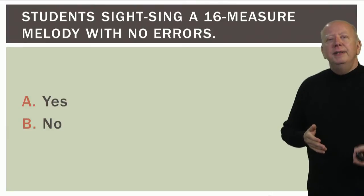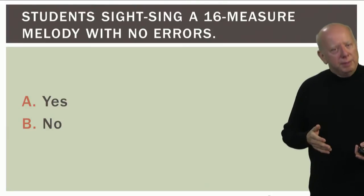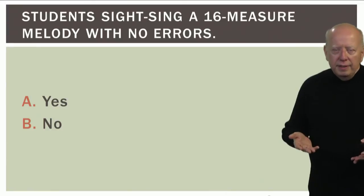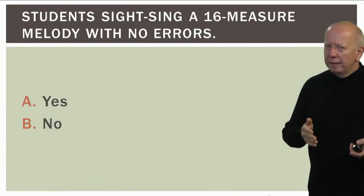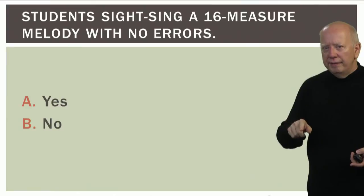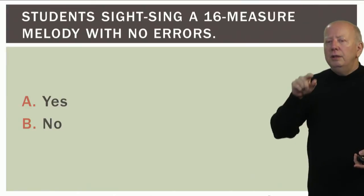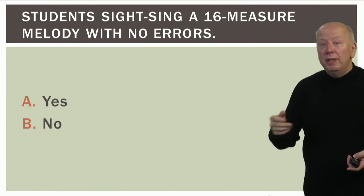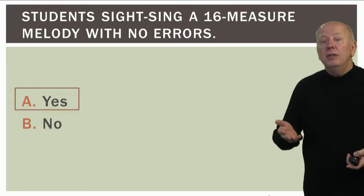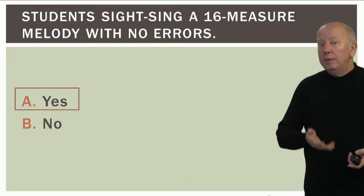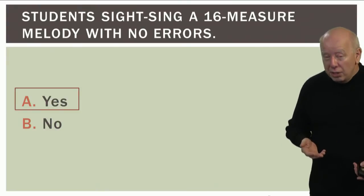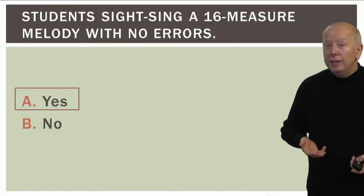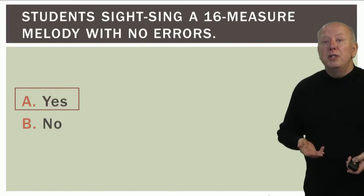Now consider: 'Students sight-sing a 16-measure melody with no errors.' That's a very specific outcome — you know exactly what students have to do and what the outcome is. They either sight-sing it with no errors or they don't. This is certainly measurable and it's quite clear what you have to do to measure it.